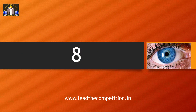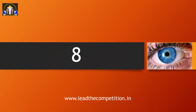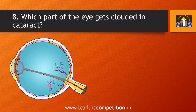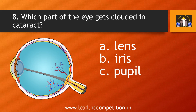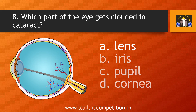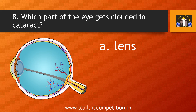Question number 8. Which part of the eye gets clouded in cataract? A. Lens, B. Iris, C. Pupil, or D. Cornea. The answer is A. Lens.